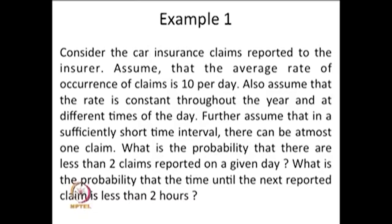Less than two claims reported means: what is the probability that in a given day either no claim or one claim is reported? We also ask a second question: what is the probability that the time until the next reported claim is less than two hours? That is, given one claim has just been reported, what is the probability that the next claim will be reported before two hours?